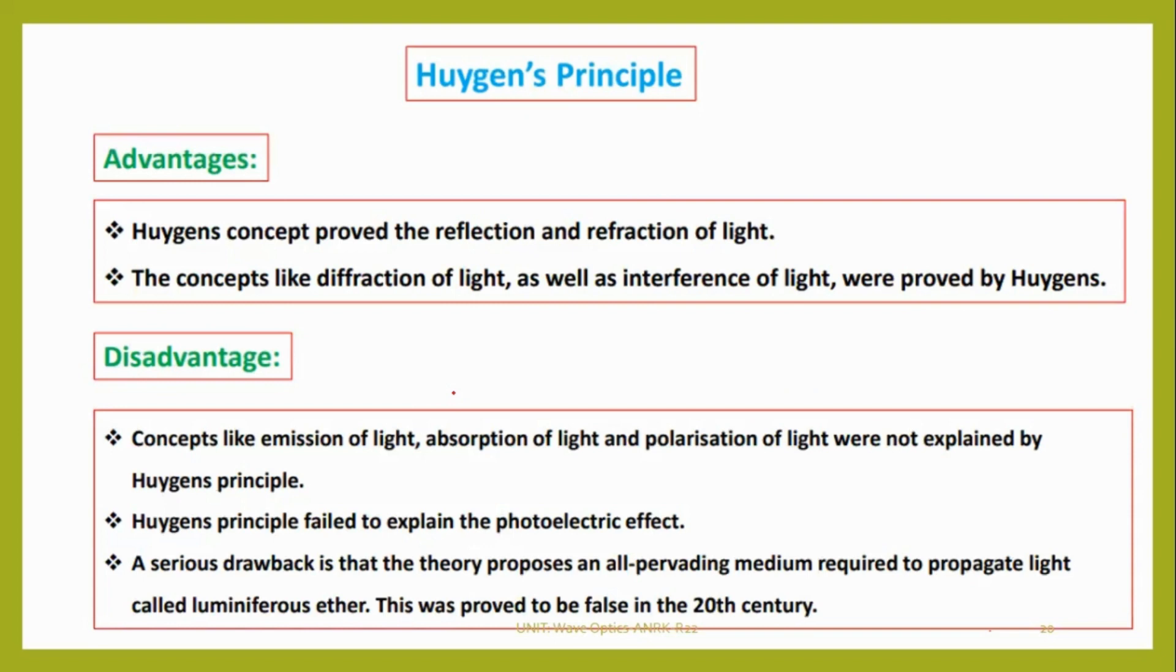What advantages do we get with it? Huygens concept proved reflection and refraction of light, diffraction of light, and interference. Even though it is able to explain many phenomena, it fails to explain how light will be emitted, absorbed, or polarization.